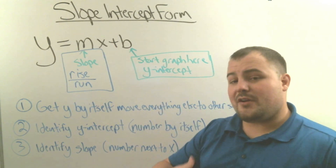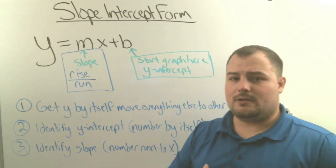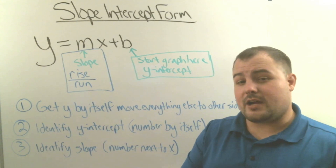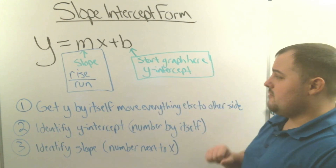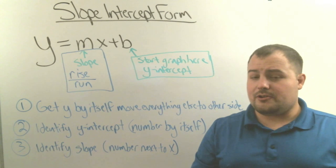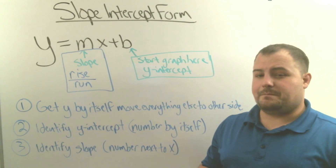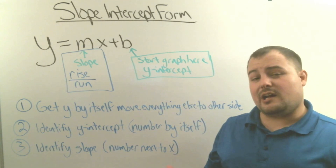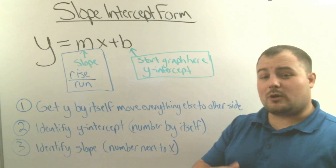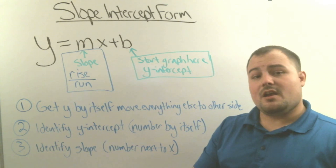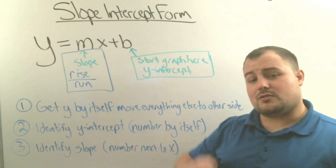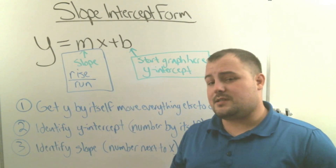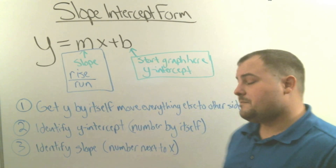The b is very, very important in slope-intercept form, because the b tells your graph where it's going to be starting. It's the start of the graph. You're always going to start your graph at the b, because it's the y-intercept — that's the point where our graph hits the y-line. The y-intercept is our starting point, and we have to start by graphing the y-intercept, then use the slope to plot additional points.